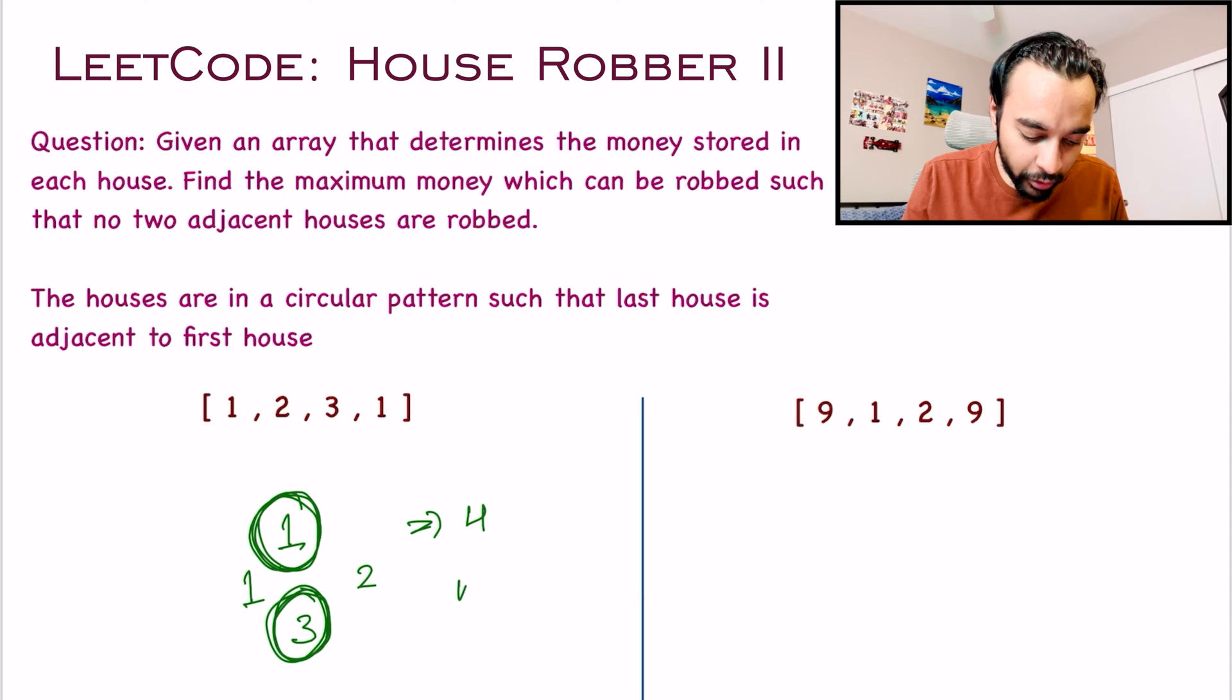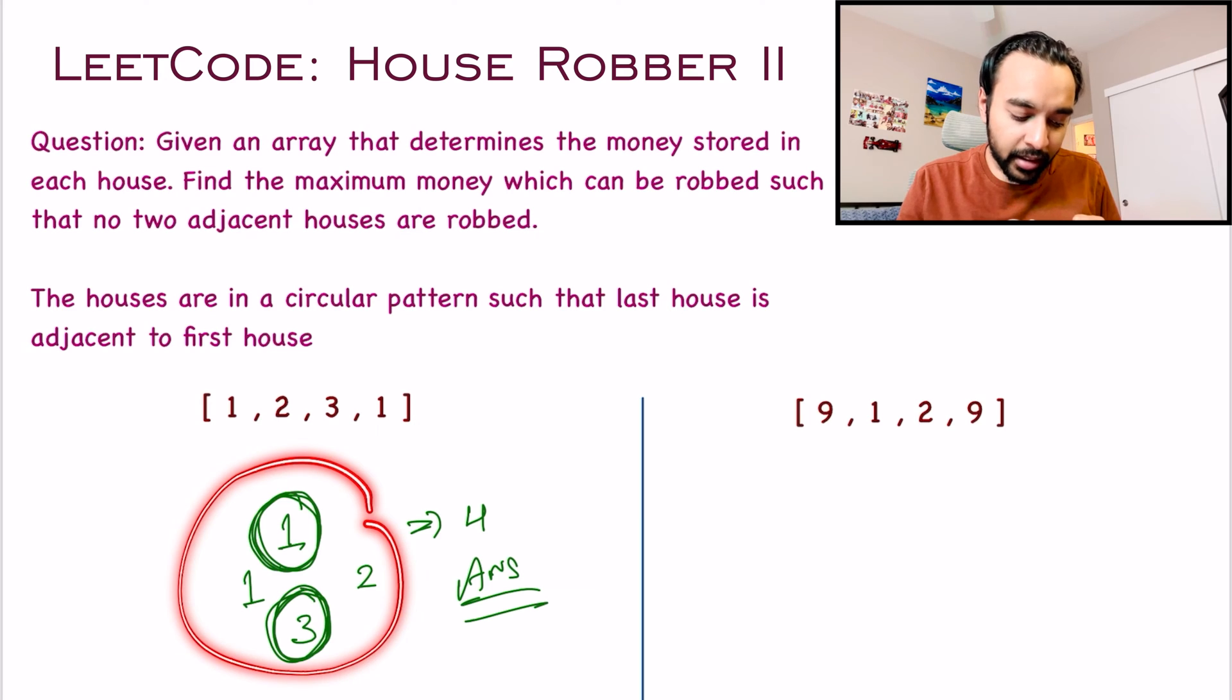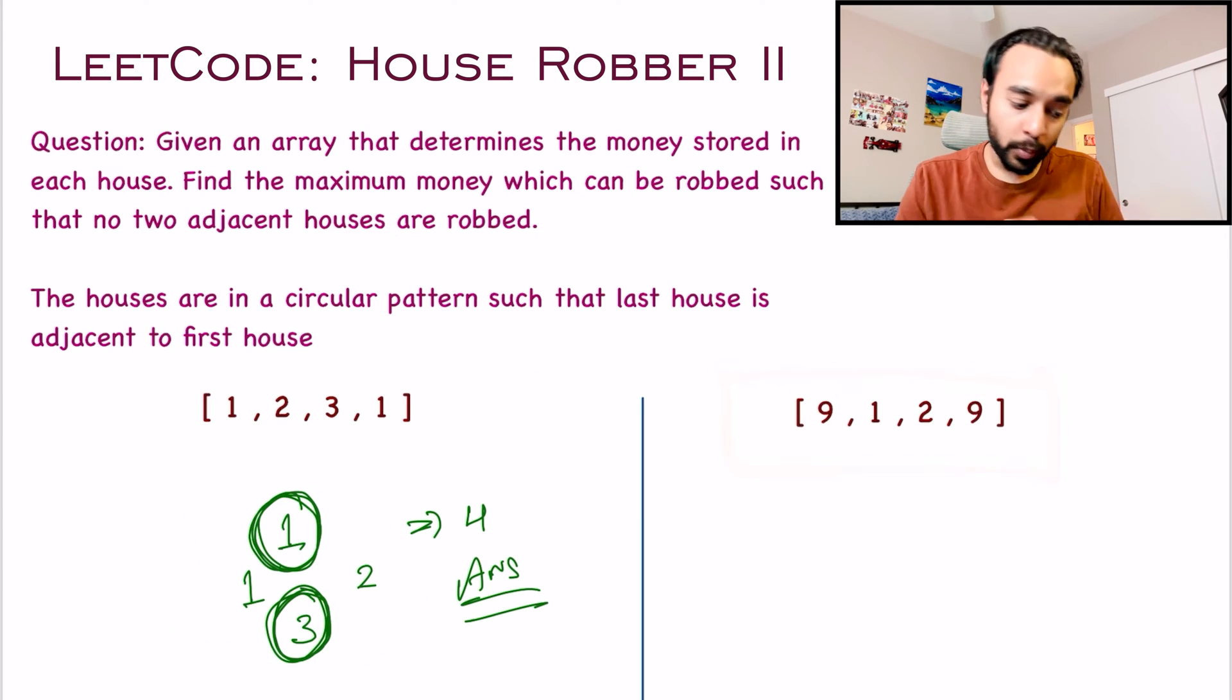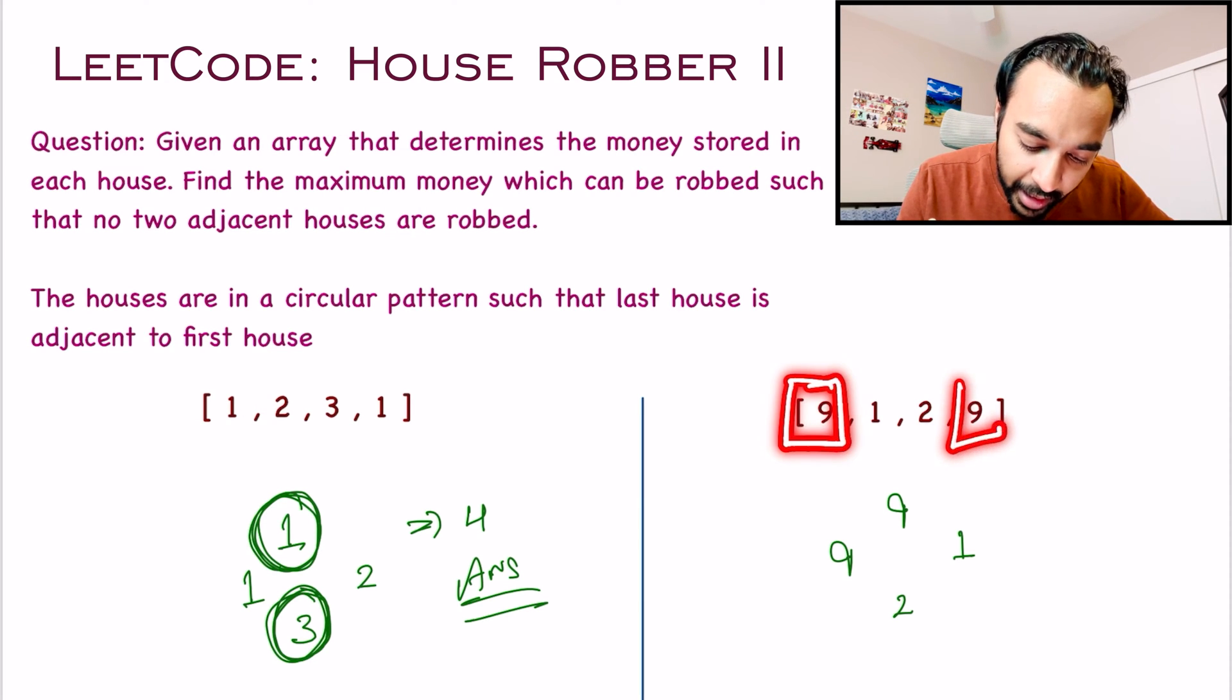So in this test case, 4 will be your answer. We could not see the effect of a circular pattern in this particular test case. But let us look at our test case number 2. This time, when I try to look at the houses, they are arranged like 9, 1, 2, and 9. So if this had been a previous problem, you could have achieved the maximum loot by selecting 9 and then a 9 again, since they are not adjacent to each other.